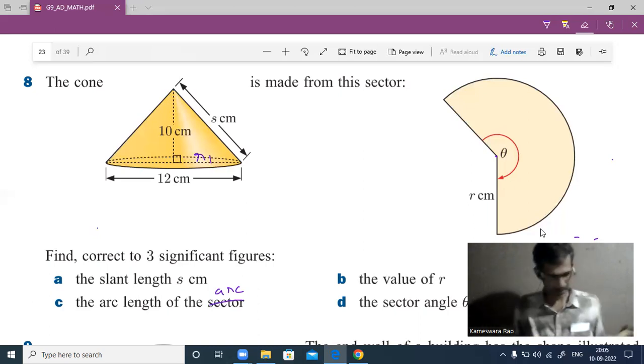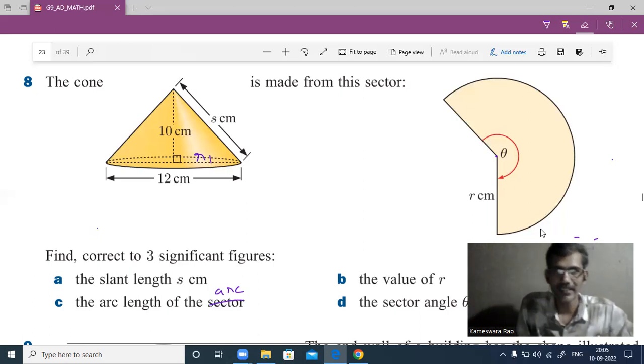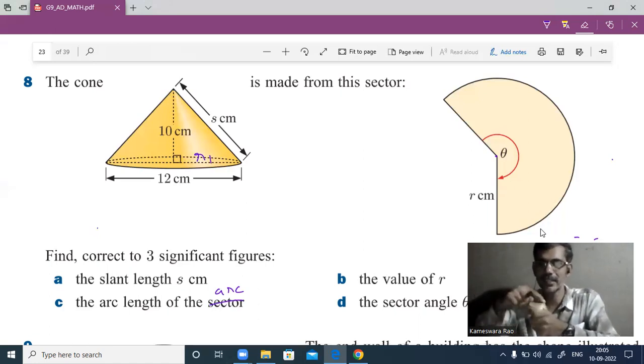How are the dimensions converted? This slant height is there. If you cut here, then the sector is formed. That will become the radius of the sector—this s will be the radius of the sector. This curve, the circumference of the base of the cone, will become the length of the arc.